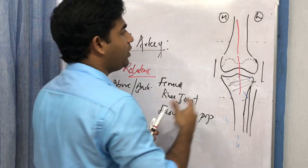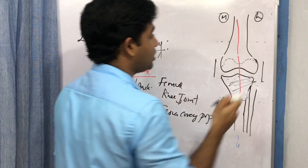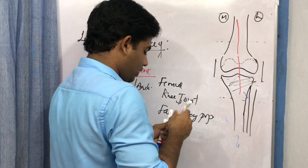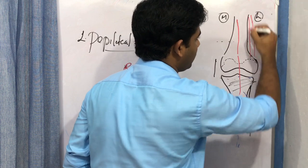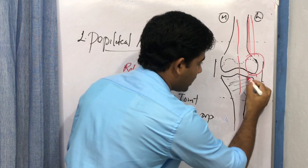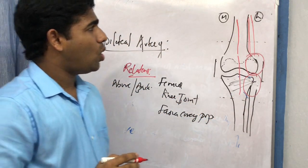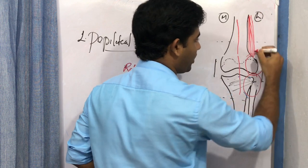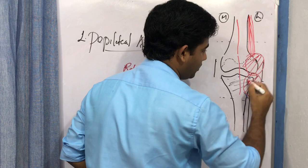For the lateral relationships of the popliteal artery: superolaterally you have the biceps femoris, then the lateral femoral condyle, and then the lateral head of the gastrocnemius muscle.